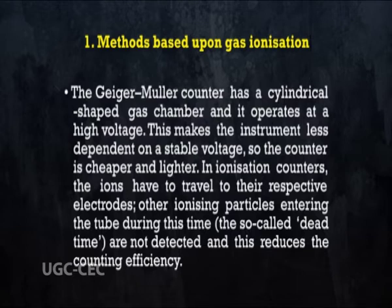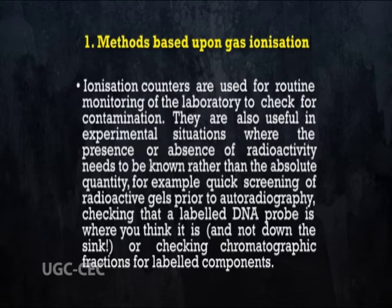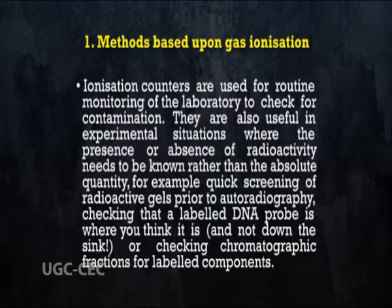In ionization counters, the ions have to travel to their respective electrodes. Other ionizing particles entering the tube during the so-called dead time are not detected, and this reduces the counting efficiency. Ionization counters are used for routine monitoring of the laboratory to check for contamination. They are also useful in experimental situations where the presence or absence of radioactivity needs to be known rather than the absolute quantity — for example, quick screening of radioactive gels prior to autoradiography, checking that a labeled DNA probe is where you think it is, or checking chromatographic fractions for labeled components.